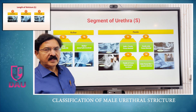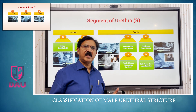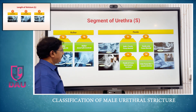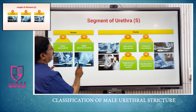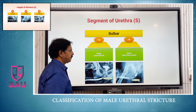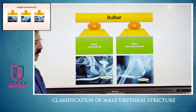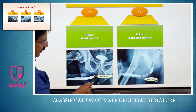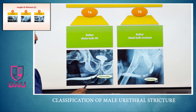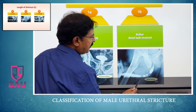The S parameter refers to the segment of the urethra involved in the stricture process — specifically, whether it is the bulbar urethra or the penile urethra. The bulbar urethra is further subdivided into S1a and S1b. In S1a, the distal bulb is normal and the stricture is in the proximal bulb. In S1b, the proximal bulb is normal but the distal bulb is involved in the stricture process.